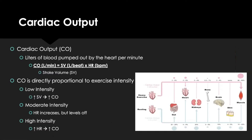Cardiac output is determined by stroke volume times heart rate. It's the amount of blood pumped out of the heart per minute and is directly proportional to exercise intensity. At low intensity, increased stroke volume raises cardiac output. At moderate intensity, stroke volume stays the same but cardiac output increases because heart rate increases.